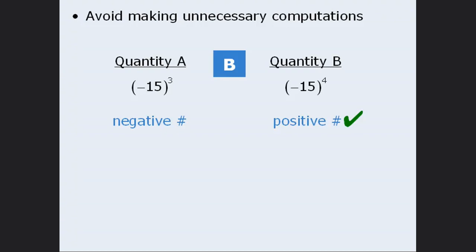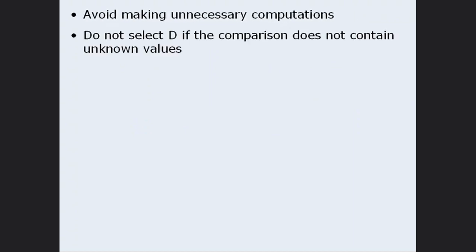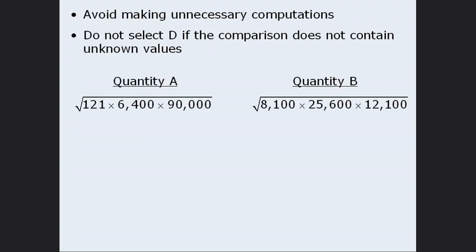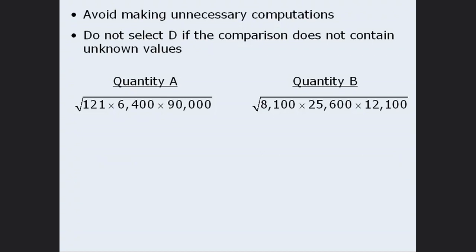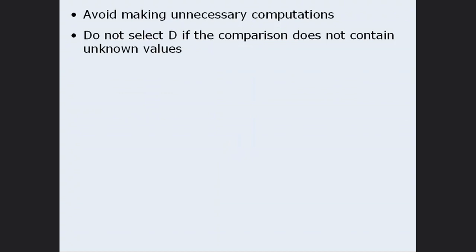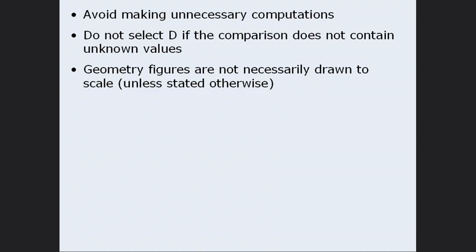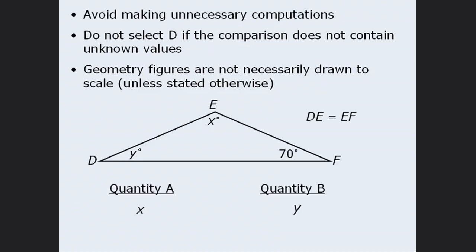Notice that we were able to reach this conclusion without performing any lengthy calculations. The next tip is: do not select answer choice D if the comparison does not contain any unknown values. For example, in this question, we can see that both quantities must evaluate to be specific numbers. Answer choice D says that the relationship cannot be determined from the given information — but if the two quantities can be evaluated, then they can definitely be compared. So if you don't know how to solve this question and are forced to guess, we can be certain that the answer is not D. The next tip is about geometry questions: remember that figures are not necessarily drawn to scale unless there's a statement saying that they are. So we cannot conclude that since angle X looks bigger than angle Y, then it must be bigger. Instead, we must apply rules of geometry to determine the relationship between the two angles.